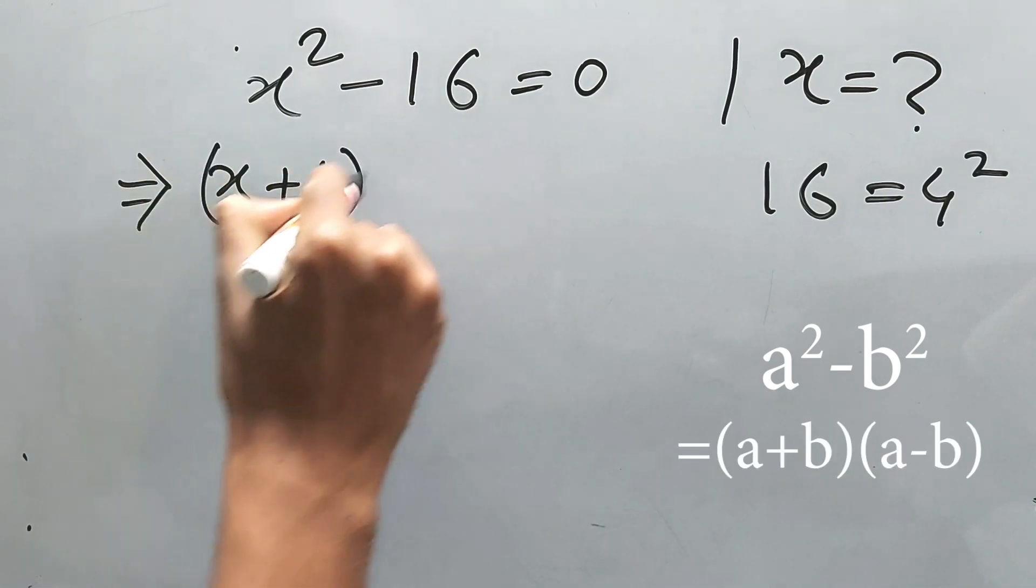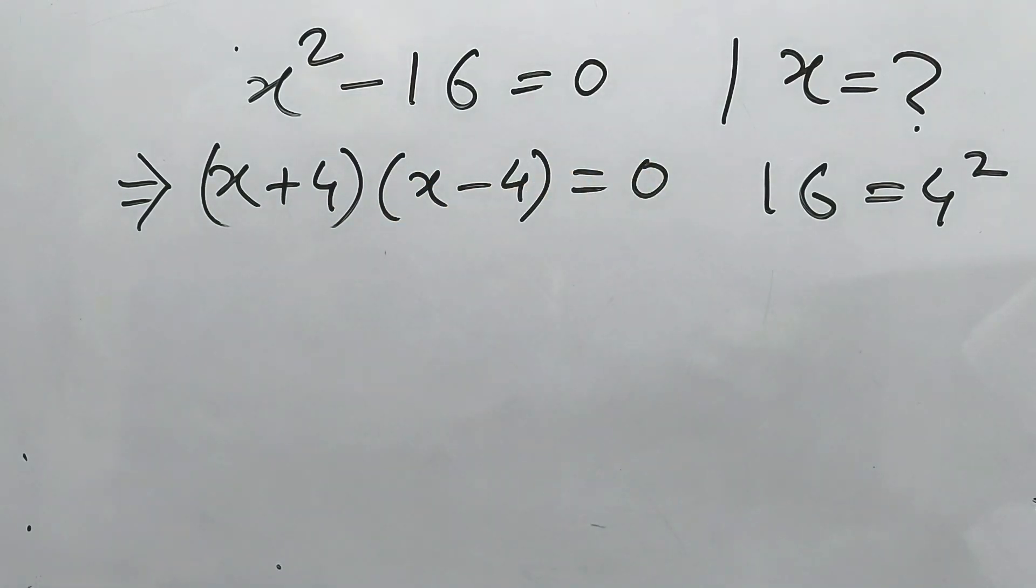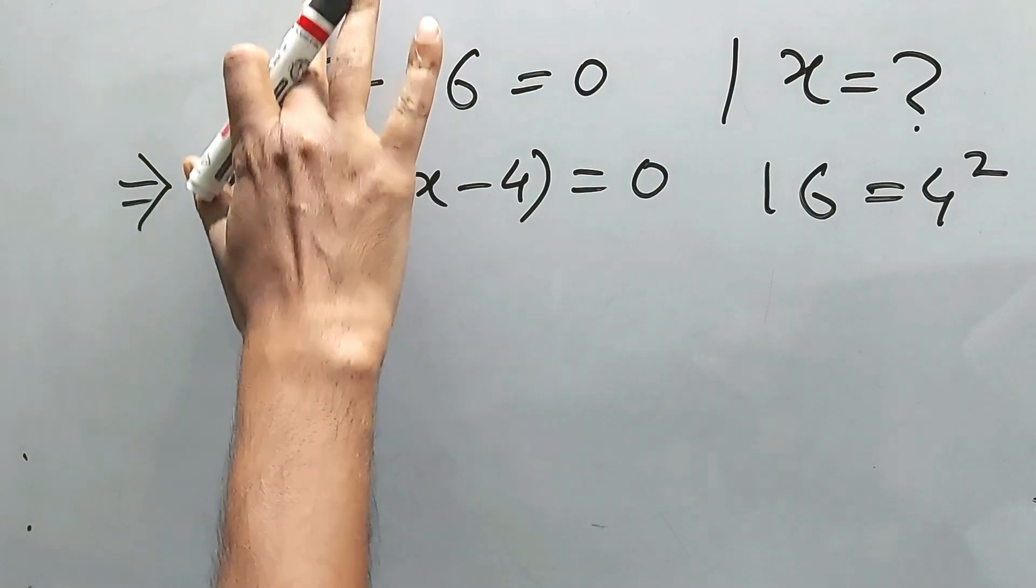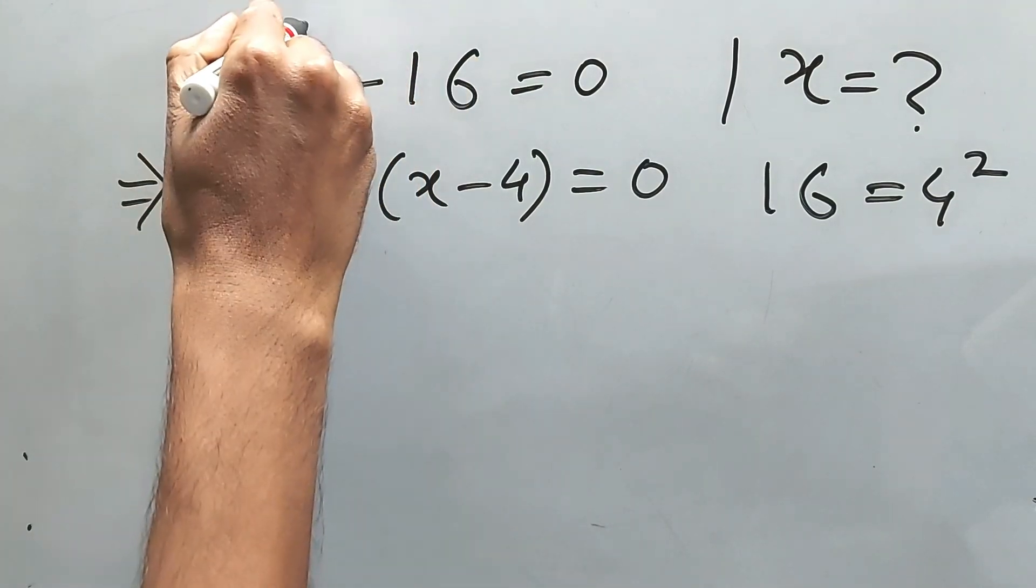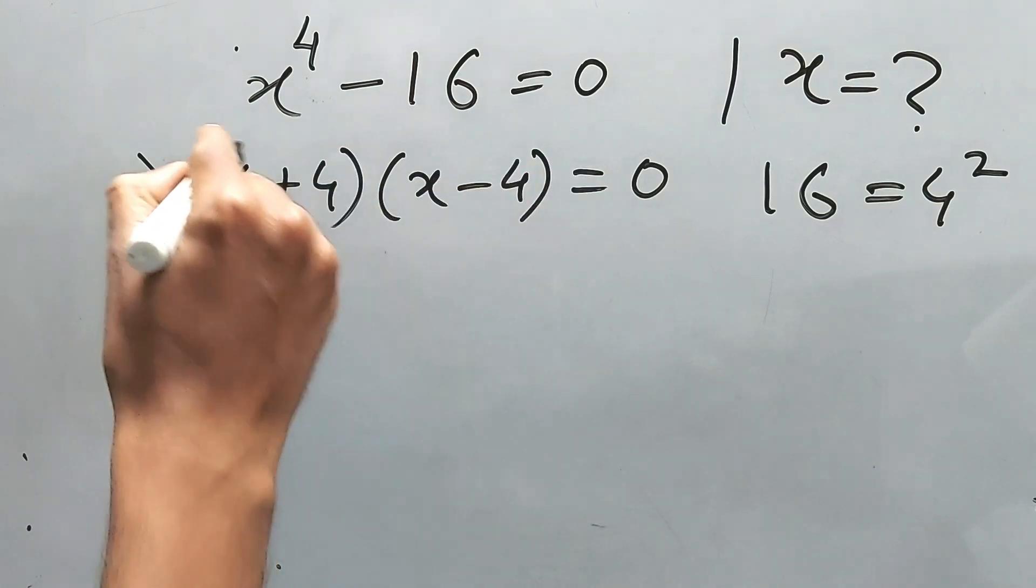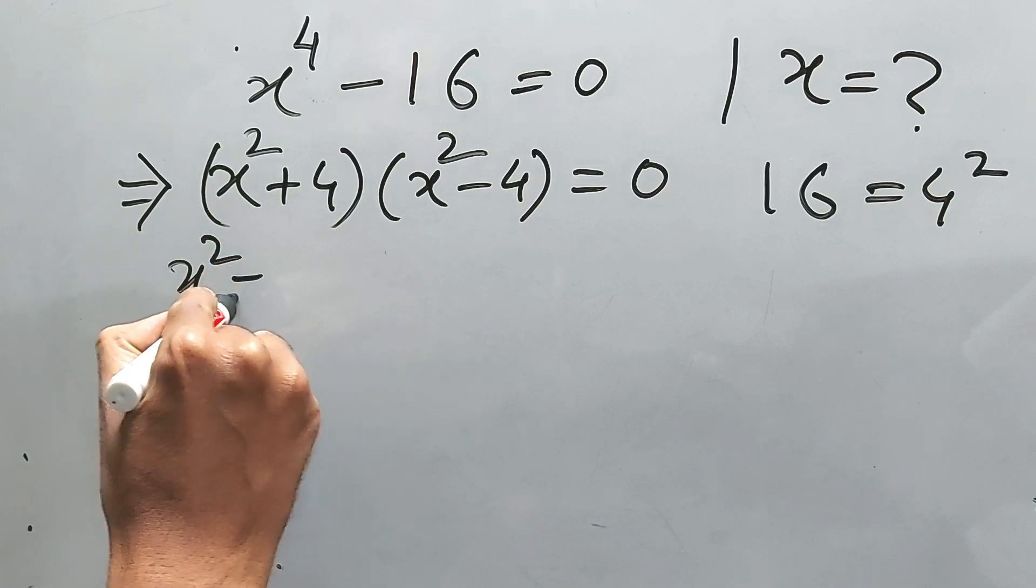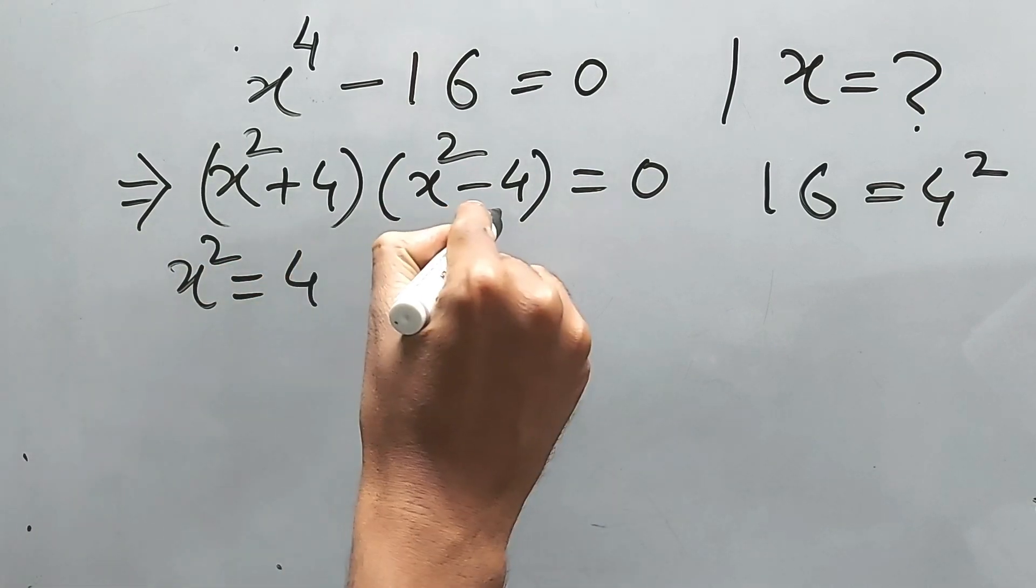Into x minus 4 is equal to zero. Well, the actual sum is x to the power 4, so this one will be x squared and x squared. If x squared is equal to 4 from this one.